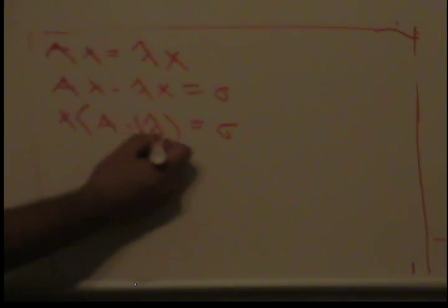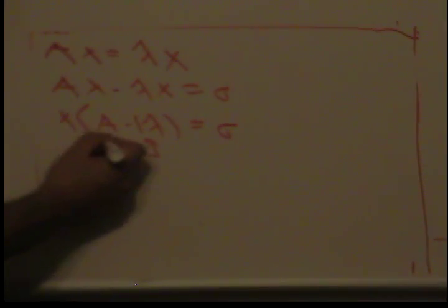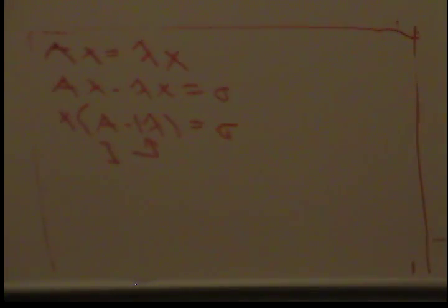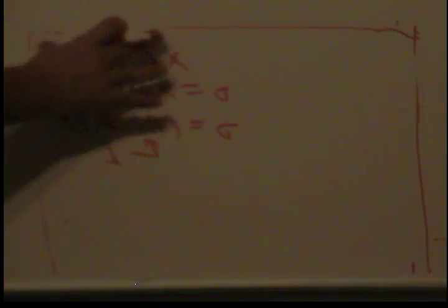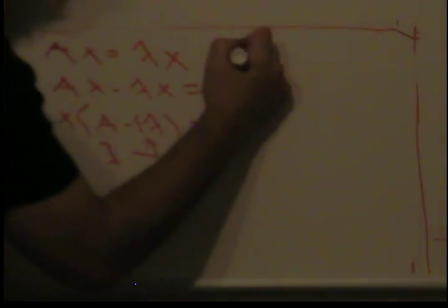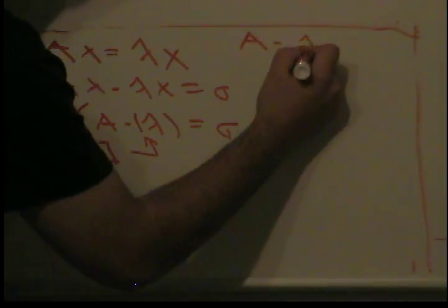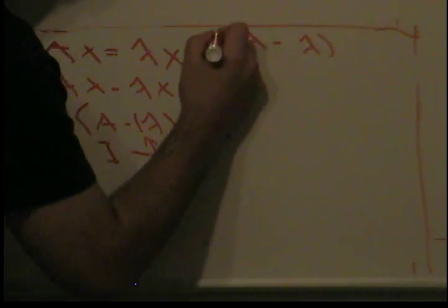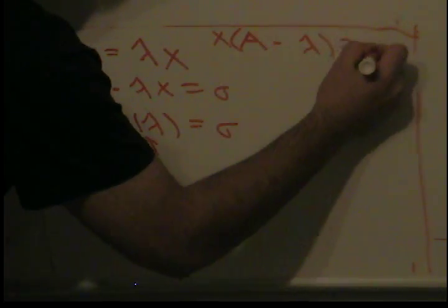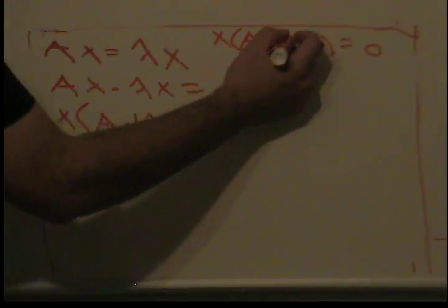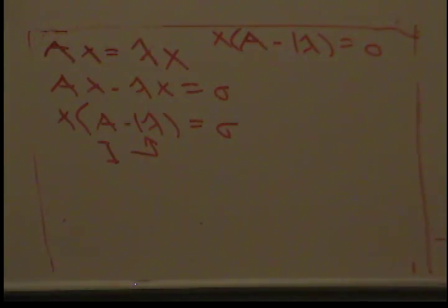Using this formula for your reference, we have A minus lambda x equals 0. We're going to use this to find the eigenvalues, where the eigenvalue is the determinant of A minus lambda set equal to 0.